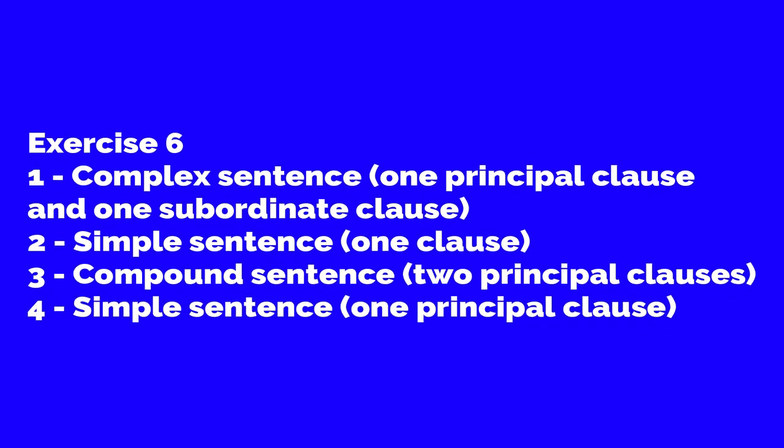Exercise six: Identify the following sentences as simple, complex, or compound. First: 'They predicted that it would win' — this is a complex sentence, because it has one principal clause and one subordinate clause. Second: 'The weather being fine, the children went out to play' — this is a simple sentence, because it has only one clause. Third: 'Ravi woke up early but he could not reach school on time' — this is a compound sentence, because it has two principal clauses.